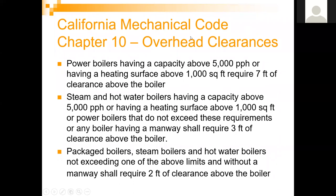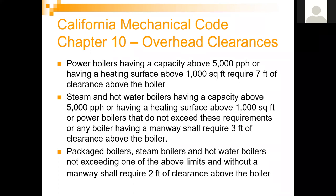California Mechanical Code Chapter 10 covers overhead clearances. Power boilers having capacity above 5,000 pounds per hour or heating surface above 1,000 square feet require seven feet of clearance above the boiler. Steam and hot water boilers with capacity above 5,000 or heating surface above 1,000 square feet, or powered boilers not exceeding those limits, require three feet clear above the boiler. Packaged steam boilers and hot water boilers not exceeding the above limits and without a manway only require two feet clearance above.